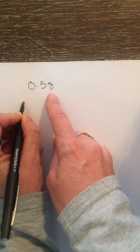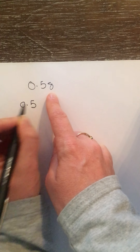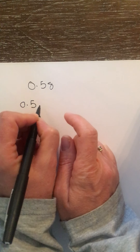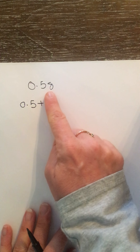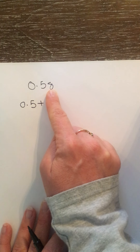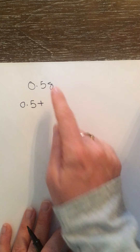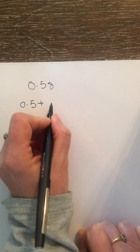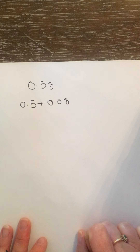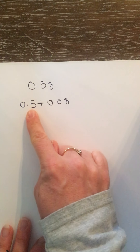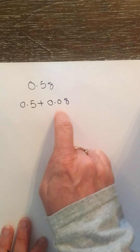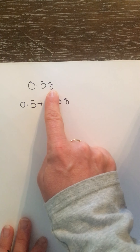So I'm going to write that as 0.5 — that's how we write five tenths. Then I go to my next place value, which is the hundredths. There are eight hundredths, so I write eight hundredths as the decimal 0.08. So we have the decimal 0.58 broken into five tenths plus eight hundredths, because the eight is in the hundredths place.